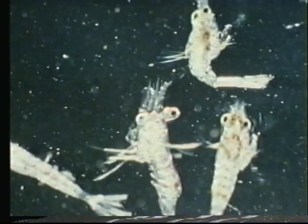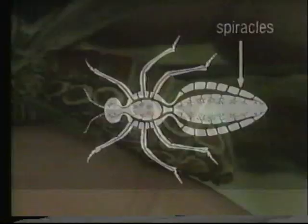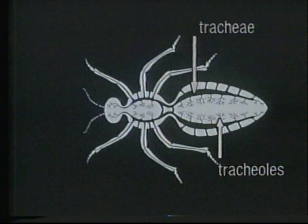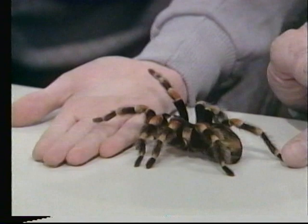Most crustaceans have feathery gills under their carapace; movements of the limbs circulate water over the gills. Terrestrial arthropods use air instead of water as an oxygen source. Insects have a series of tiny holes called spiracles along their sides, linked to a branching network of tubes — the tracheae and tracheoles — that carry oxygen to all parts of the body. Body movements help to circulate the air. Invertebrates that have mechanisms for circulating food and oxygen around the body can become large and complex.